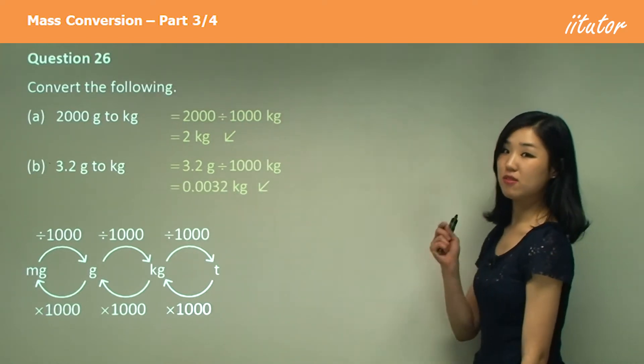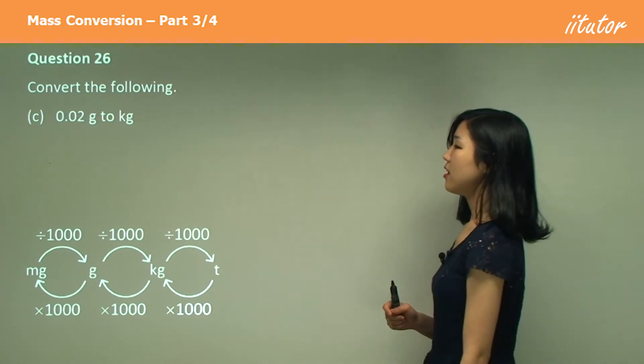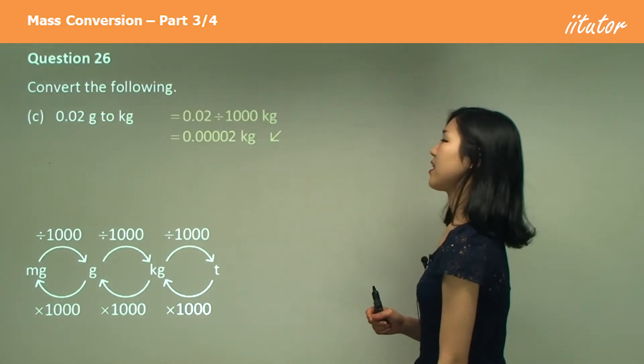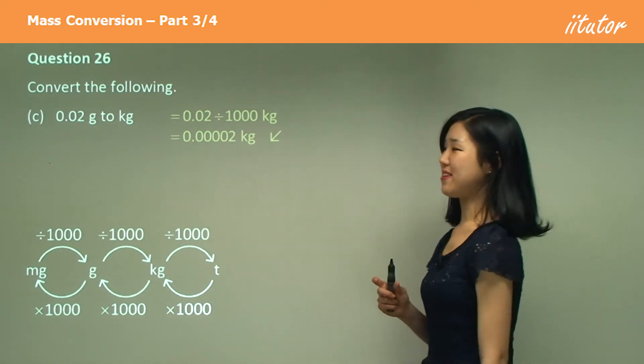Make sure you watch out for where you put the decimal again. And again, divide by a thousand, getting a lot of little zeros in between the decimal one and two.